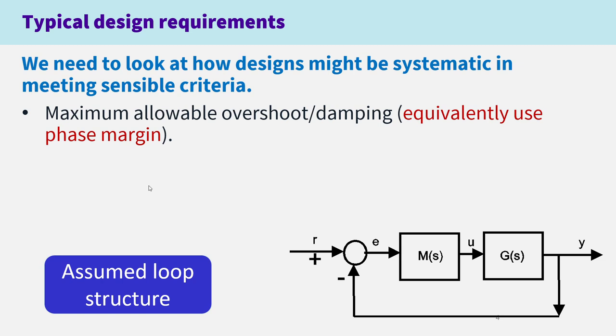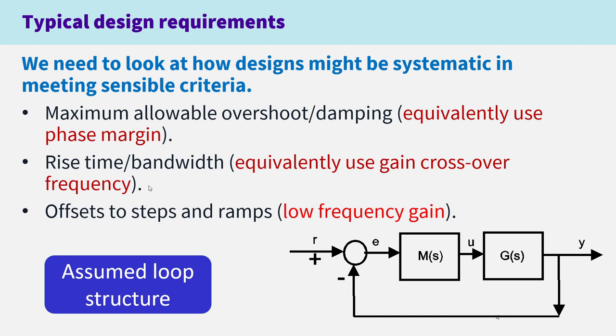Some typical design requirements: we need to look at how designs might be systematic in meeting sensible criteria. One criteria could be a maximum allowable overshoot or damping, and in frequency response we usually convert this to an equivalent phase margin. We might be interested in the rise time or the bandwidth, and equivalently in frequency response we'll use the gain crossover frequency. Similarly we're interested in offsets to steps or ramps, and this is a low frequency gain criteria.